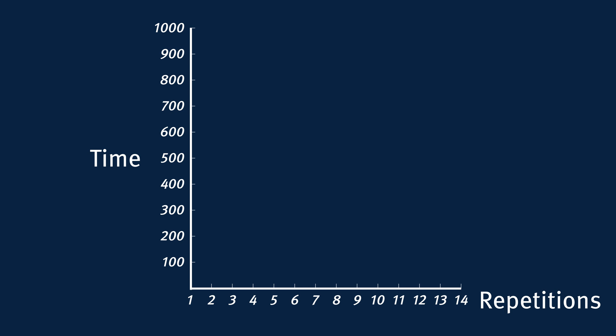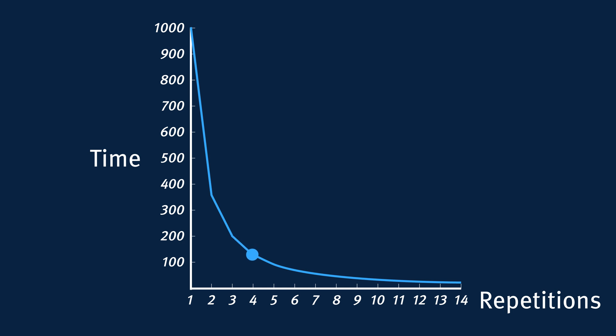Let's look a little more closely at this curve. When you first start learning how to do a task, it takes a long time to do it — this is generally true for any task. By the second time, you'll be faster. By the third time, you'll be even faster, and so on. At a certain point, each additional repetition won't bring much improvement. You might still get a little bit faster, but not by much.